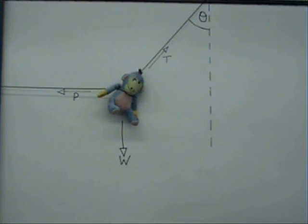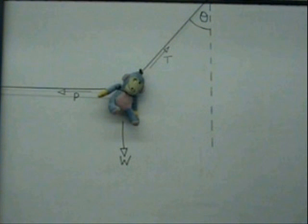Since the monkey is in equilibrium, the vertical component of the tension must be equal to the weight. The tension must be greater than the weight since only part of the tension is equal to the weight. The horizontal component of the tension must be equal to the pulling force P.